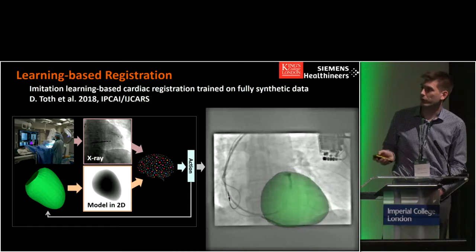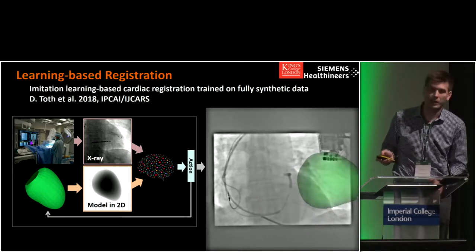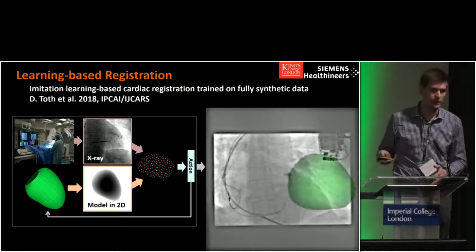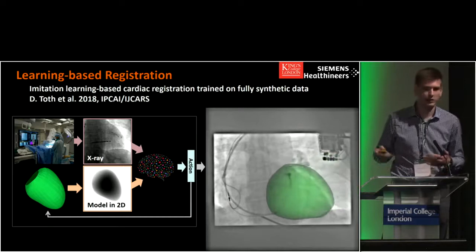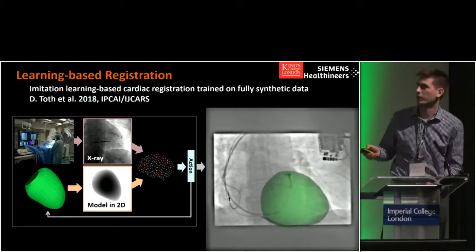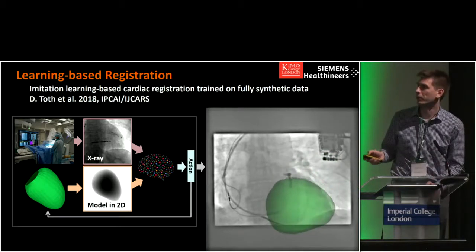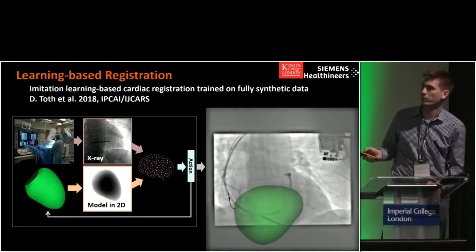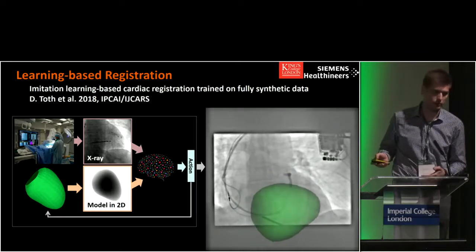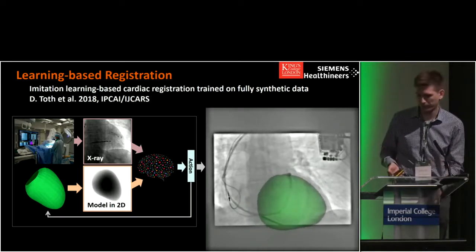These two images are shown to a neural network that predicts the next action, and this happens in an iterative fashion — if you iterate a few times, you can see on the right the mesh or the model will be moving closer and closer to the final ideal alignment.